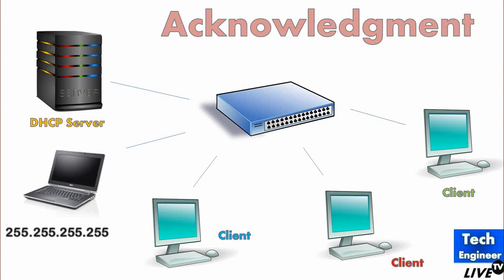The reason the acknowledgement is broadcast everywhere is that there might be a secondary DHCP server also connected on the network. That secondary DHCP server can also check that this particular laptop user received this IP. It records the MAC address and the corresponding IP address that has been allocated, so every server on the network is informed.